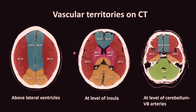These are the vascular territories on CT. An axial CT image above the lateral ventricles shows the medial frontal lobe supplied by the anterior cerebral artery, laterally by the MCA, and the occipital cortex by the posterior cerebral artery. At the level of the insula, the anterior portion is supplied by the ACA, most of the remainder by the MCA and its perforating branches, and the thalamus and occipital lobe by the PCA. At the level of the cerebellum, supply is from the vertebrobasilar arteries.